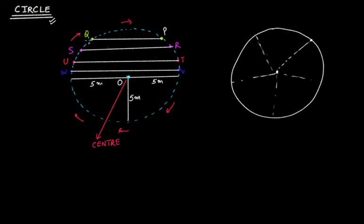These line segments formed by joining any two points on the circle are important. If you take any two points on a circle and connect them — no matter how close they are — even if the points are very close, like points A and B, or P and Q, or R and S, T and U, or V and W — these are all called chords.